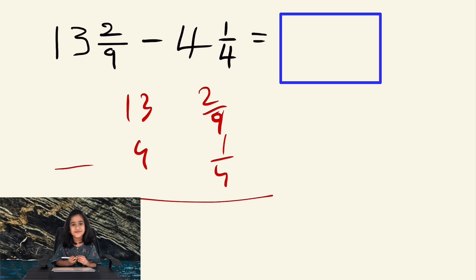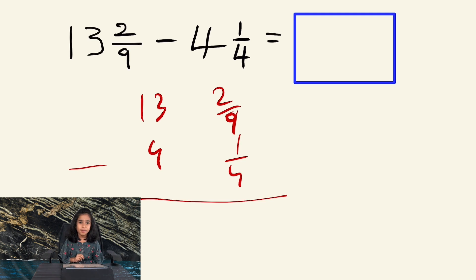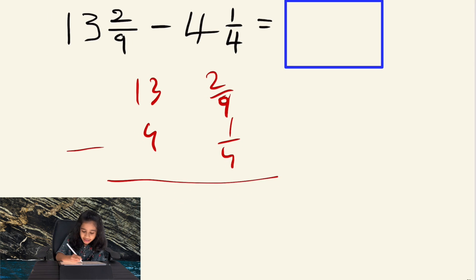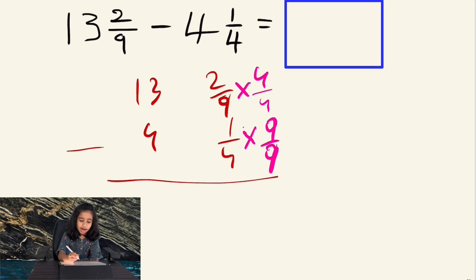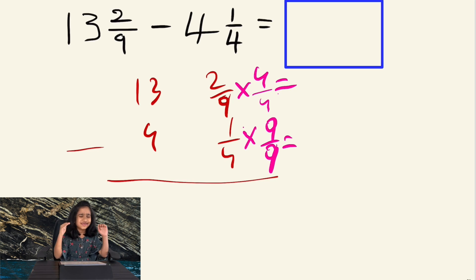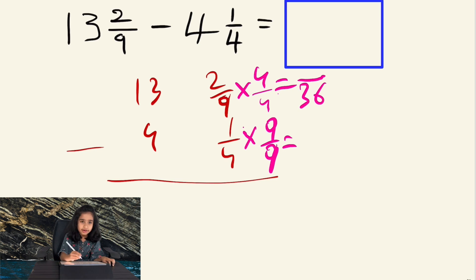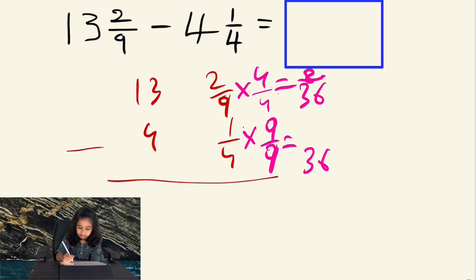Now I want to use 36 as a common denominator. For that, I need to multiply the whole fraction 2/9 by 4/4. And here, I want to multiply the whole fraction 1/4 by 9/9. It's just a simple trick — you multiply the numerators and also the denominators. Multiplying the denominators gives 36, and the numerator on top gives 8. Here, the denominator is 36 and the numerator is 9.